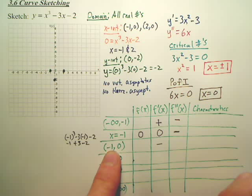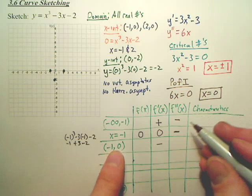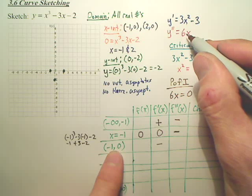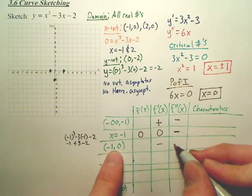Again, what's so great about these tables: you don't care about the value, you care about the positive or negative for the intervals. In the second derivative, when you plug in negative one-half, you get negative.